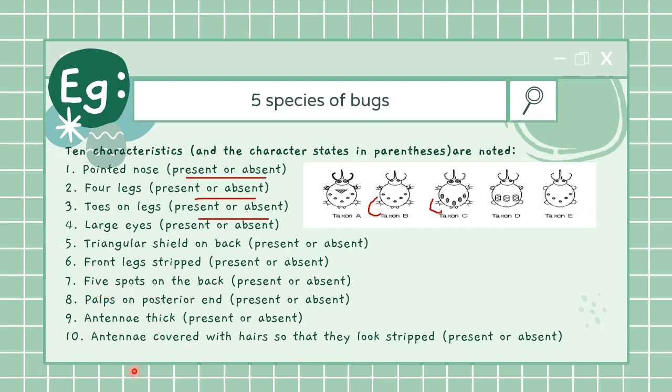If we take antenna covered with hair so that it looks striped - if you notice carefully only C has this feature. Antenna is thick - so thick antenna is in A and C only and the others have hair-like antenna.